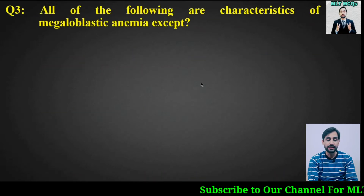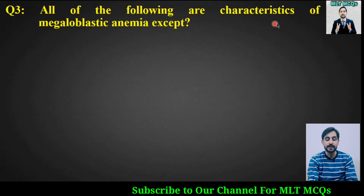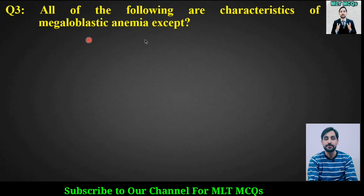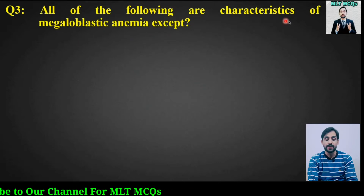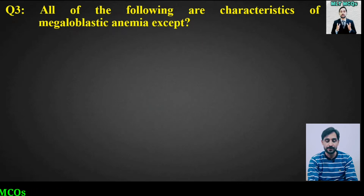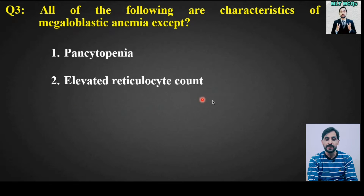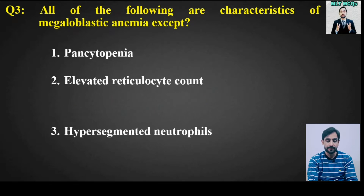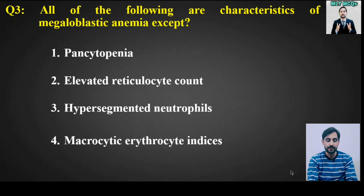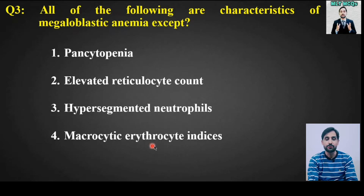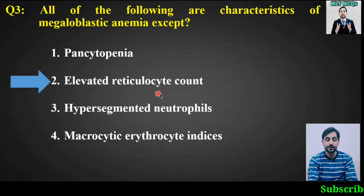MCQ number 3: All of the following are characteristics of megaloblastic anemia EXCEPT: pancytopenia, elevated reticulocyte count, hypersegmented neutrophils, or macrocytic erythrocyte indices. The right answer is option number 2: elevated reticulocyte count.